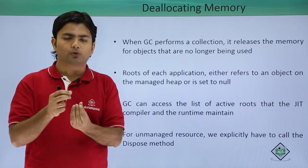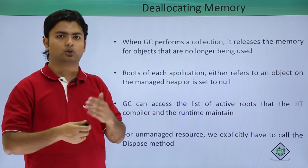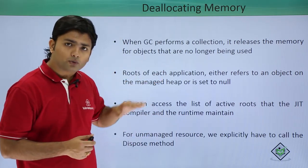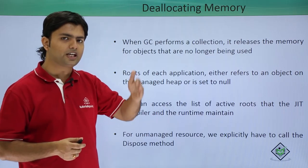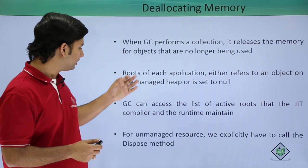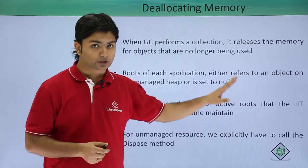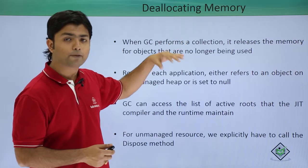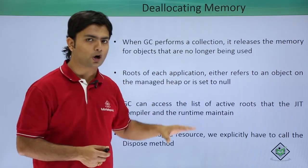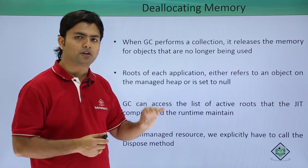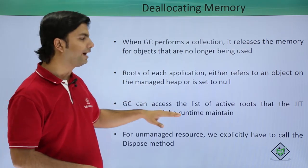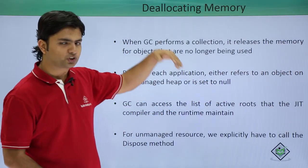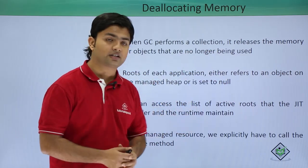That root would either be set to null or would be pointing to a particular object in the managed heap. Since all the data in the heap is linked with each other through a pointer, garbage collection can access the list of all the active roots. Active root means all the data which is not being removed during the collection — because garbage collection will remove all unused objects. So it can access all the active roots which are created and managed by JIT and the runtime environment.